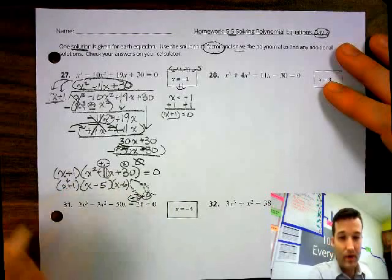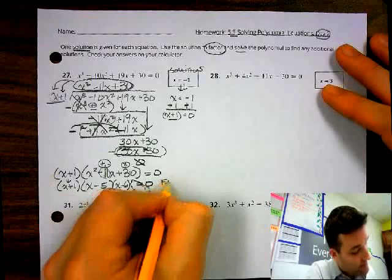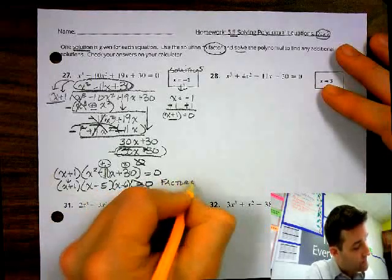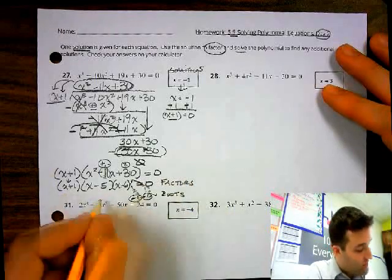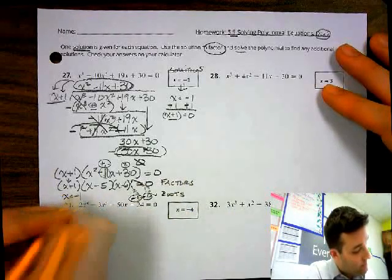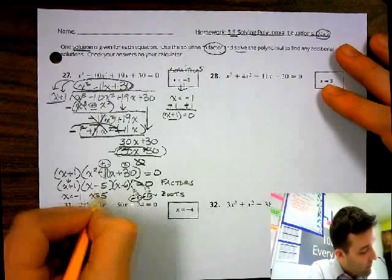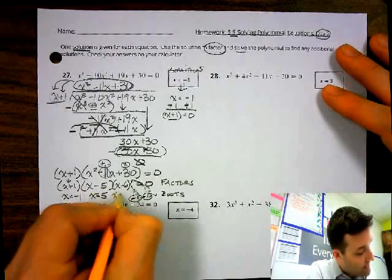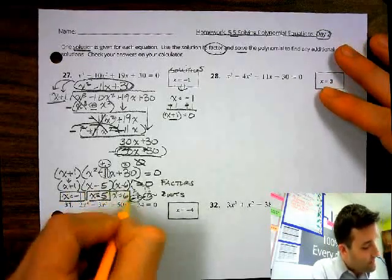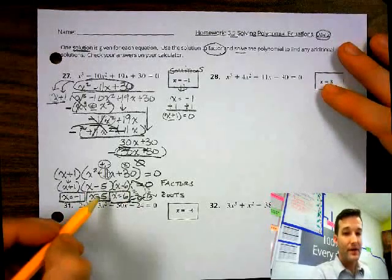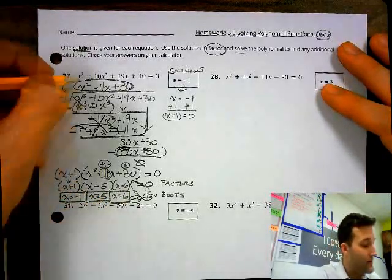That's going to equal 0. And these are your factors. So now we can write our roots. Your zeros or your roots — the solution will be x equals negative 1, x equals positive 5, and then x equals positive 6. You have three solutions. One good idea is to check and make sure if you have three solutions, you should have a leading exponent of 3.